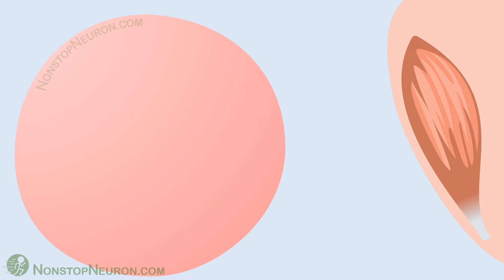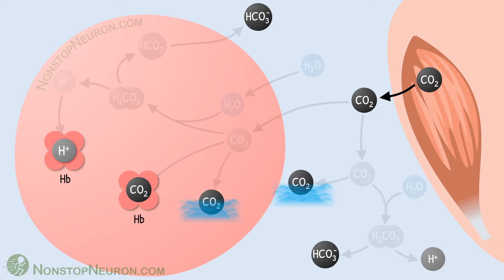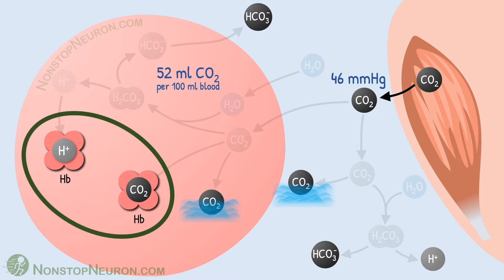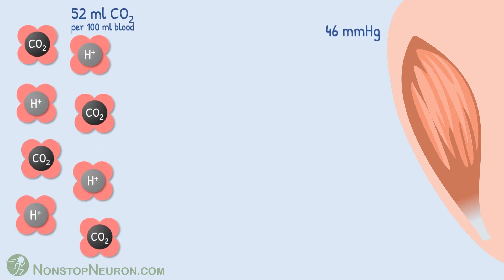This is a peripheral tissue. We have seen in the video of carbon dioxide transport that carbon dioxide diffuses from tissue to blood at peripheral sites. In blood, it undergoes multiple reactions and these forms are produced. Carbon dioxide is transported in blood in these forms. Then in the video of the carbon dioxide dissociation curve, we saw that partial pressure of carbon dioxide at peripheral sites is about 46 mmHg. At this partial pressure, blood contains about 52 ml carbon dioxide in all these forms per 100 ml blood. For discussion of the Haldane effect, only the portion associated with hemoglobin is important, so let's focus on hemoglobin.